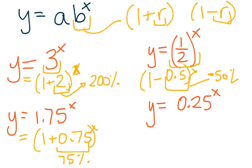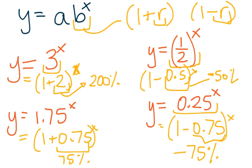And then we have 0.25. We could rewrite this base as 1 minus 0.75 to the x. Because if you subtract 0.75 from 1, you get 0.25. And this shows us that this quantity is actually decreasing by 75%.